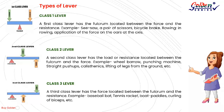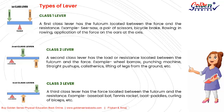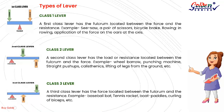Types of Lever. Class 1 Lever: a first class lever has the fulcrum located between the force and the resistance. Examples include a see-saw, a pair of scissors, a bicycle brake, and rowing — where force is applied on the oars at the axis.